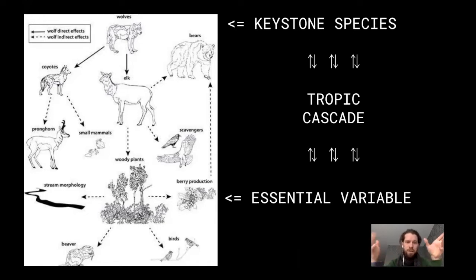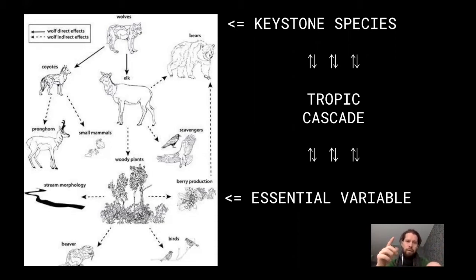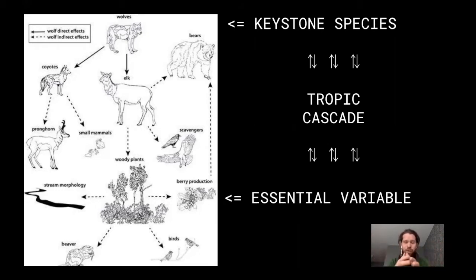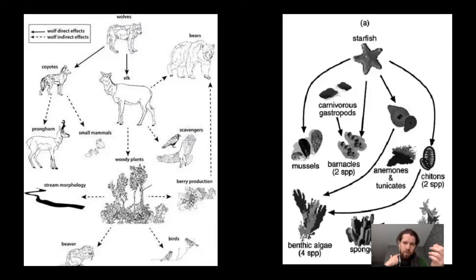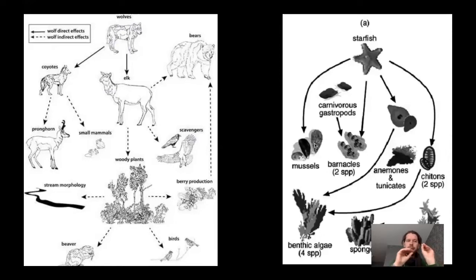By re-entering wolves, they push out the coyotes, so you see more pronghorns and small animals surviving. Wolves prefer to hunt elk because it's more meat, reducing the elk population so woody plants get a chance to grow. Since pronghorns and small animals don't eat woody plants, you get a balance in the ecosystem and the whole ecosystem becomes enriched. Yellowstone isn't the only example — in a maritime ecosystem you can have a barren landscape of mussels, and I want to emphasize that existing barren ecosystem because I'll return to it later.